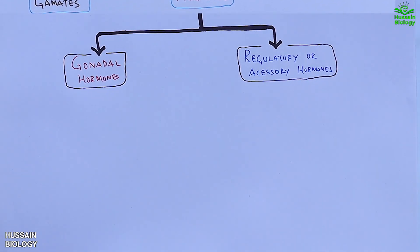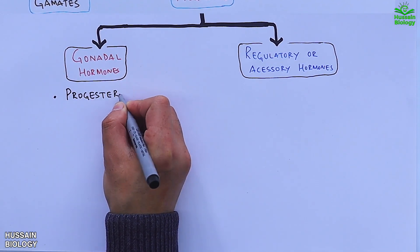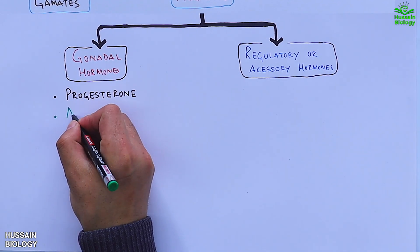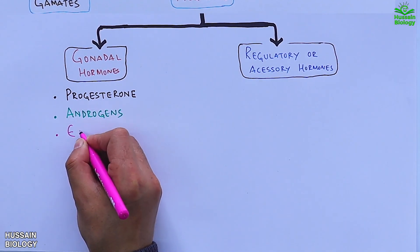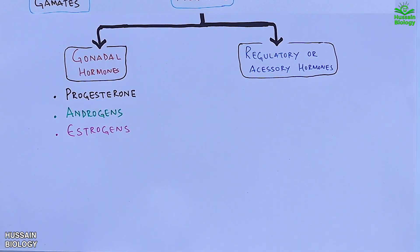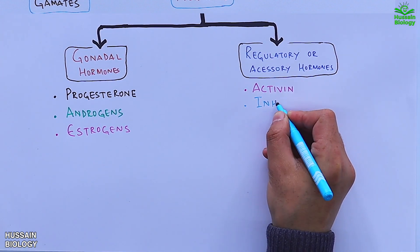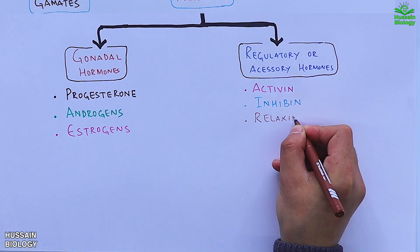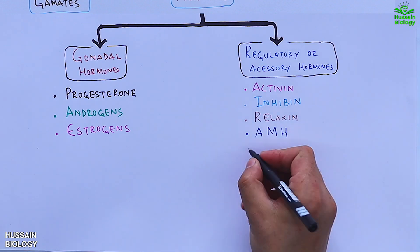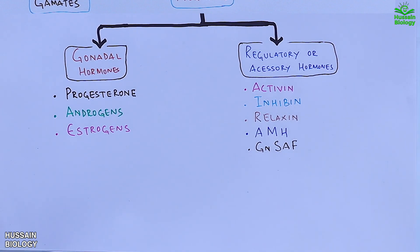The gonadal hormones include progesterone, androgens, and estrogens, whereas the regulatory hormones include activin, inhibin, relaxin, AMH, and GnSAF hormone.